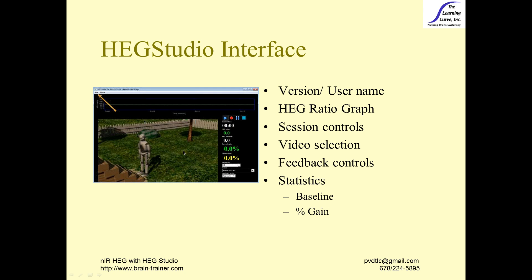You'll also see a video window. HEG Studio at present has video feedback — not with sound — but a kind of cool system where the video moves forward as you're going up and backward as you're going back down again. We also have feedback controls down here: a sensitivity button and a mode button, and a place where we can select videos from the list in the media folder inside the HEG Studio folder. We also have the timer and statistics from the session: the baseline where we started, where we are now, the percent gain, and the overall session percent gain.